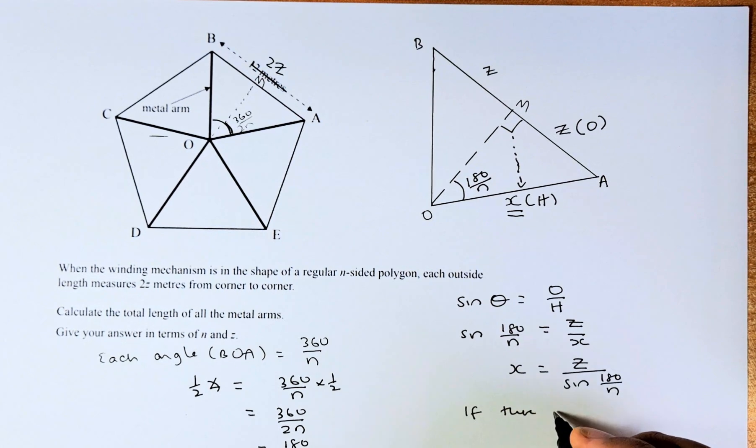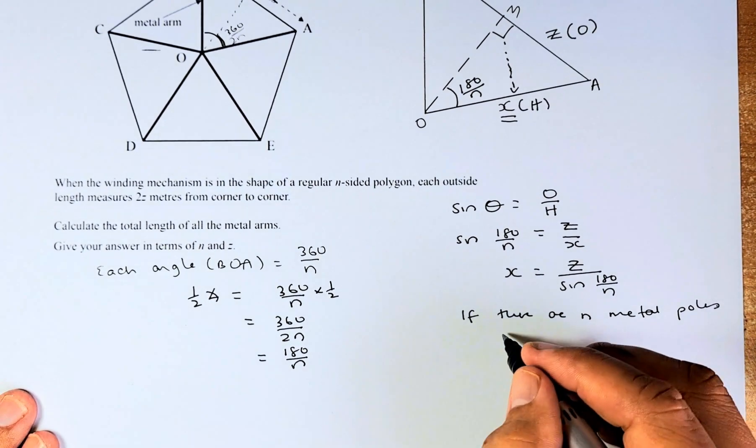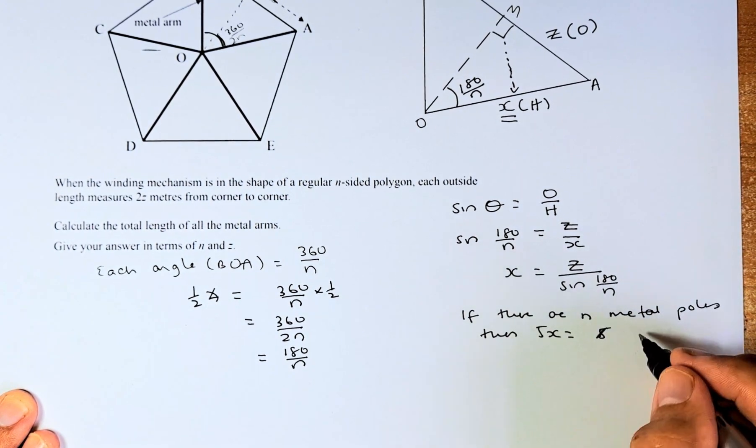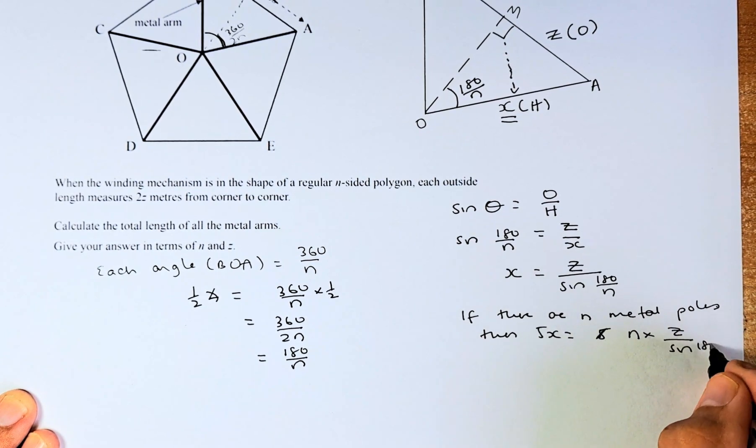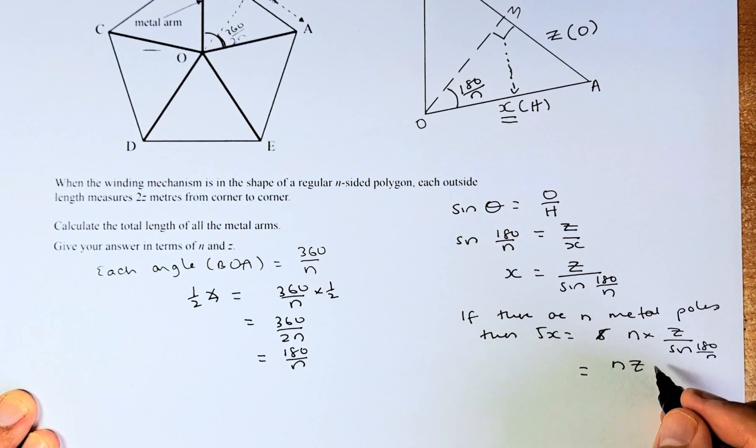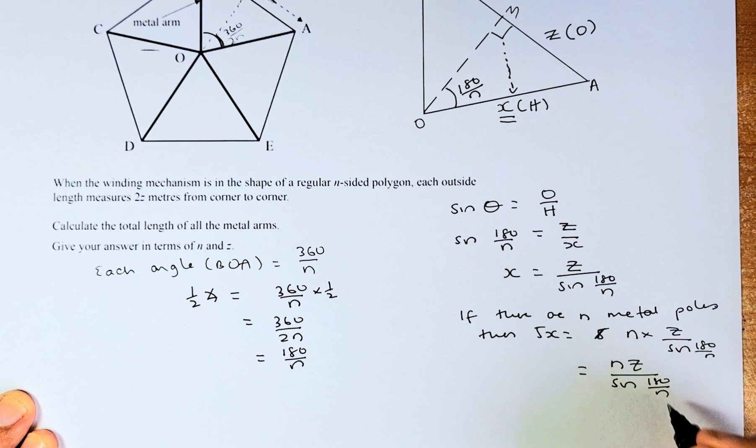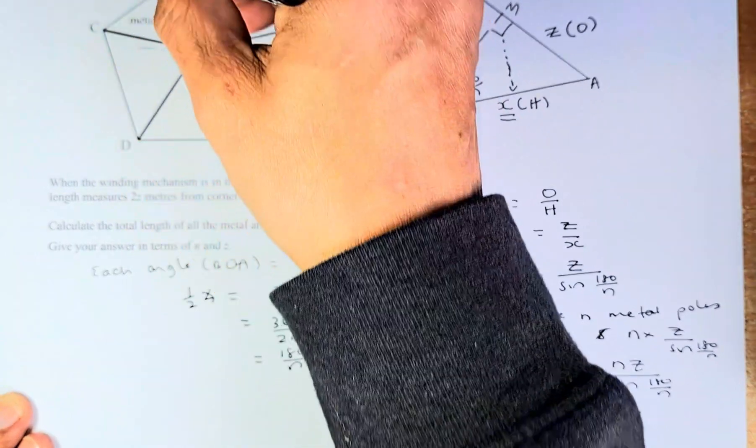So that is how you calculate. But remember there are N of this length. So you do not know how many of them. If there are N metal poles, then the total, 5X will be equal to, no not 5, N times Z over sine 180 over N. So the answer is going to be NZ over sine 180 over N. So that is how you calculate the sum of all the metal poles in the N sided polygon.